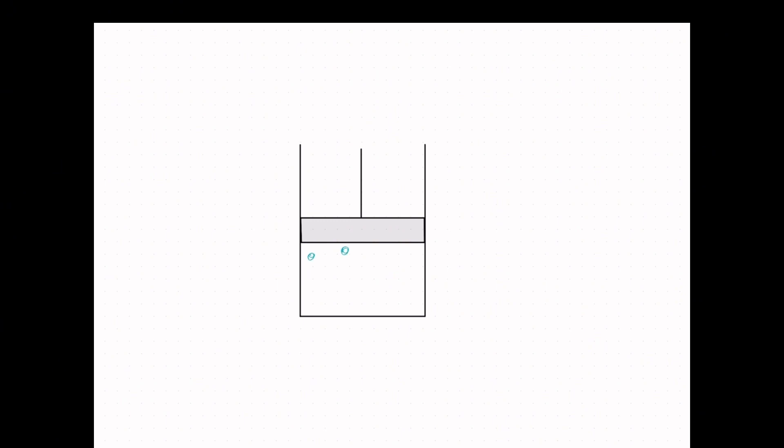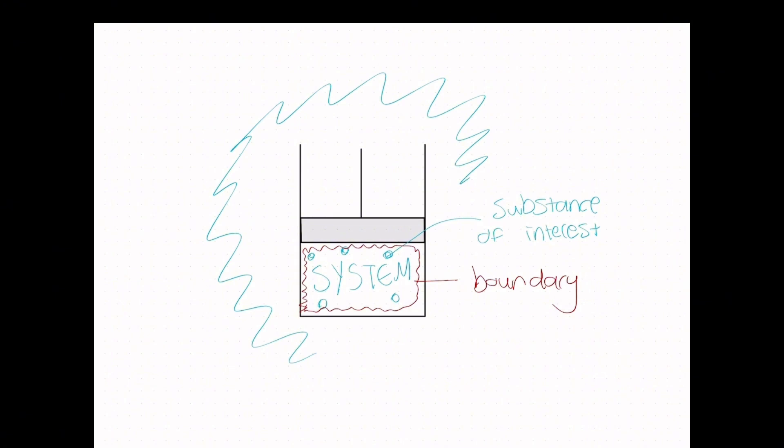So let's say you have a piston cylinder assembly. This is your piston. Inside it is the substance of interest. We select this part, the red, to be the boundary, which would make everything inside it the system and everything around it the surroundings.